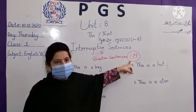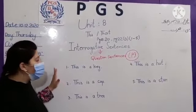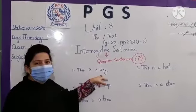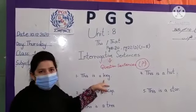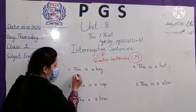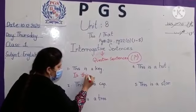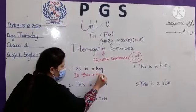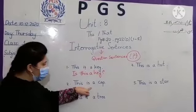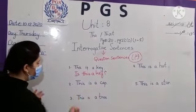Now we will change a few sentences into interrogative form, and you all have to do these five sentences in your copy. First example: 'This is a key.' How to change it? 'Is this a key?' Next: 'This is a cup' — how to change it? 'Is this a cap?'